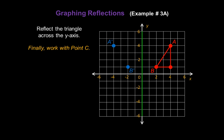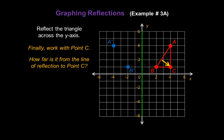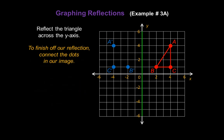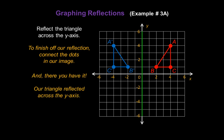Finally, let's work with point C. How far is it from the line of reflection to point C? We count over: four places. So point C prime will be four places on the opposite side of the line of reflection — one, two, three, four. And that's point C prime. To finish off our reflection, just connect the dots in the image. And there you have it — our triangle reflected across the y-axis.